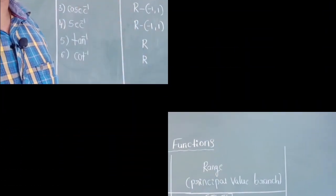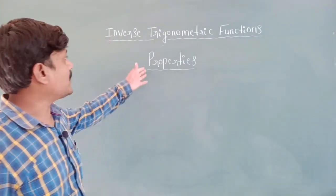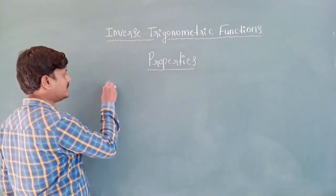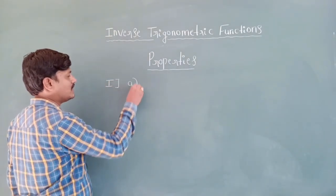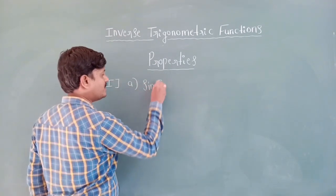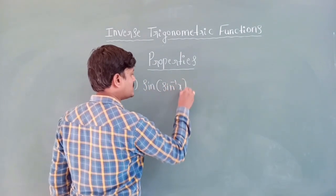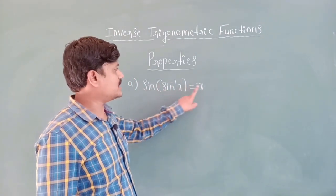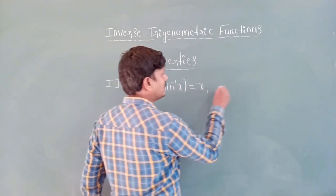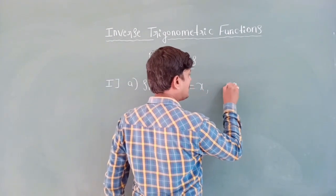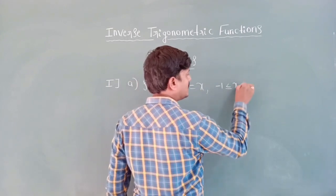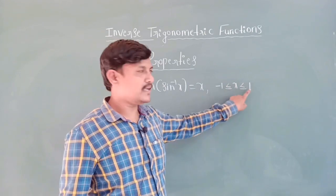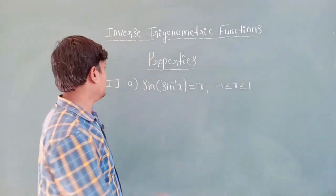Now consider properties of inverse trigonometric functions. First property: sin(sin⁻¹ x) = x, only when x is greater than or equal to minus one and less than or equal to one — meaning x lies between minus one and one.